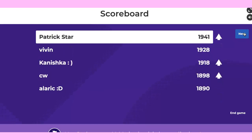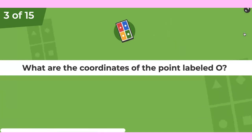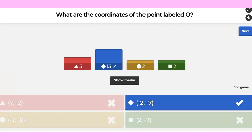Patrick is up. Question number three: what are the coordinates of point labeled O? Where is O? It's negative 2, negative 7.